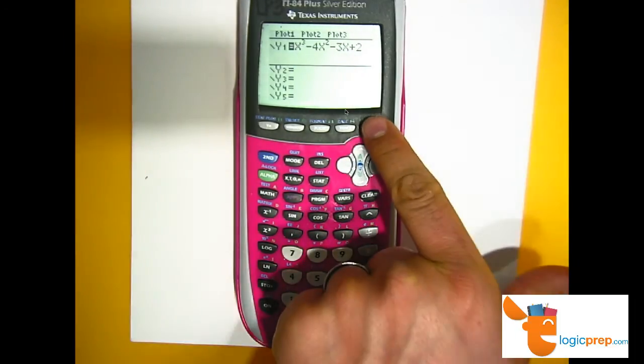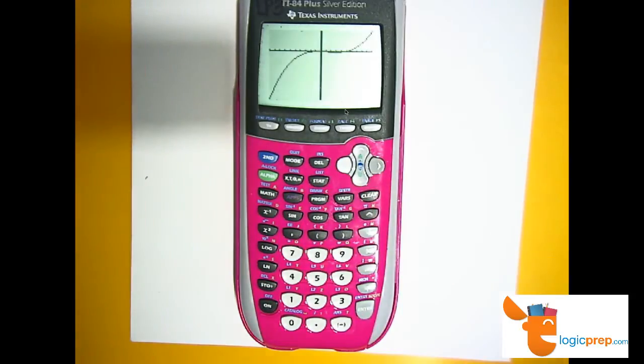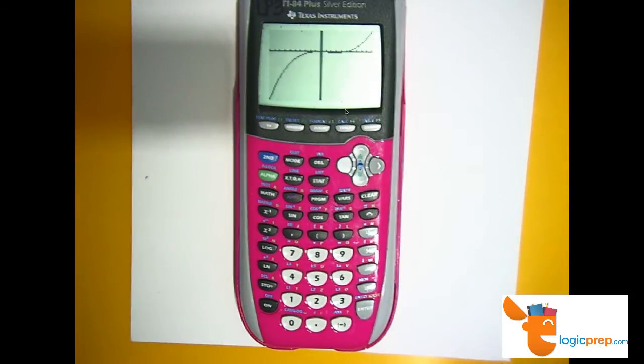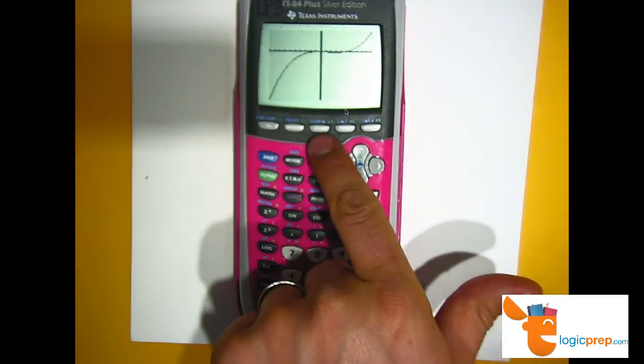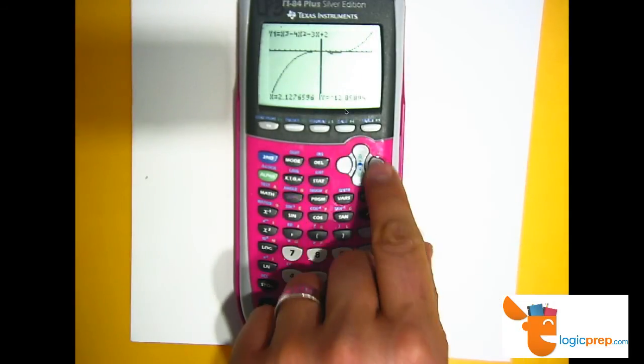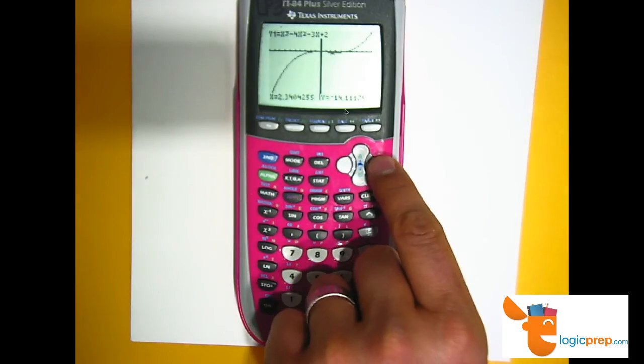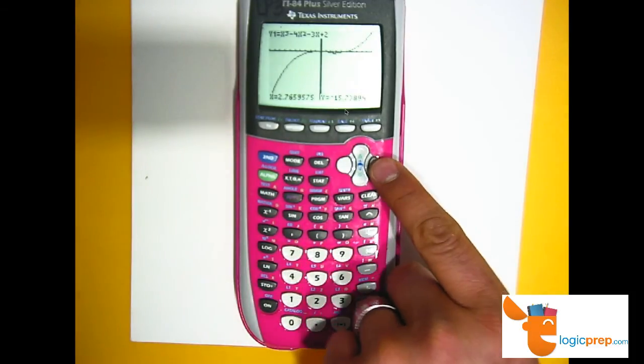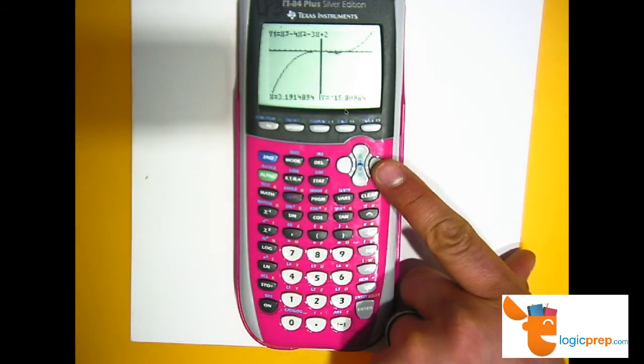Now, if I hit graph, you can do a zoom fit if it doesn't sit in properly. You can hit zoom and go down to zoom zero. But when I hit the button trace, I can see here on my x values, as I exceed 3, what's happening to y as I exceed 3?